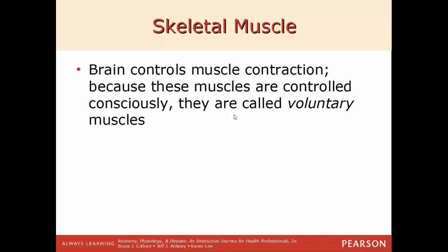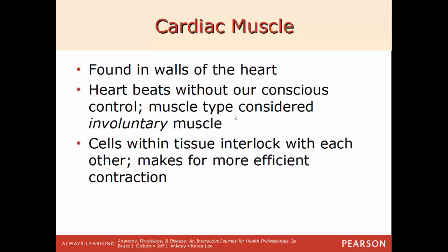Moving on to cardiac muscle — like the name indicates, it's only found in the walls of the heart. The heart beats without your conscious control; your brainstem controls it, so cardiac muscle is considered involuntary. You can't control how quickly your heart beats, how often, or with what force of contraction. The cells in cardiac muscle interlock with one another, making for a much more efficient contraction, which is exactly what you want for the heart to beat effectively.